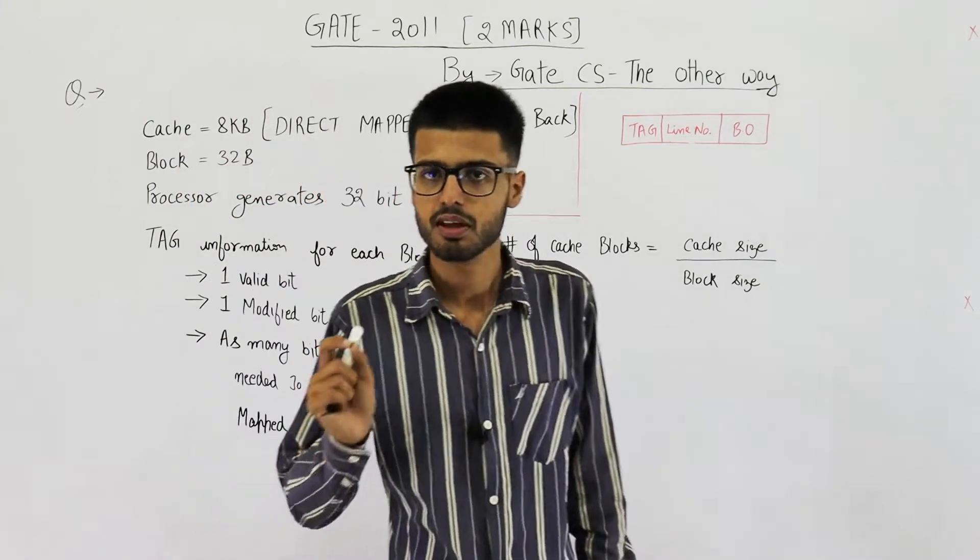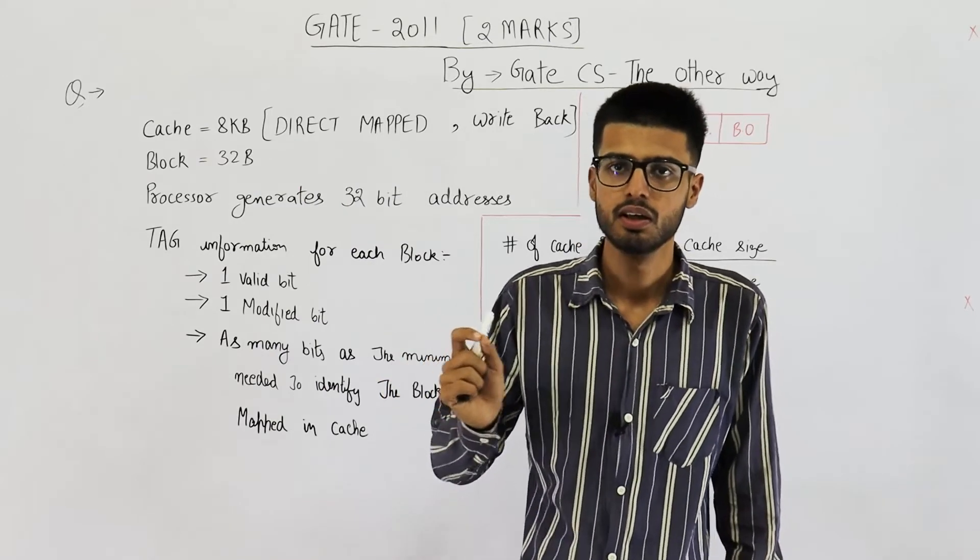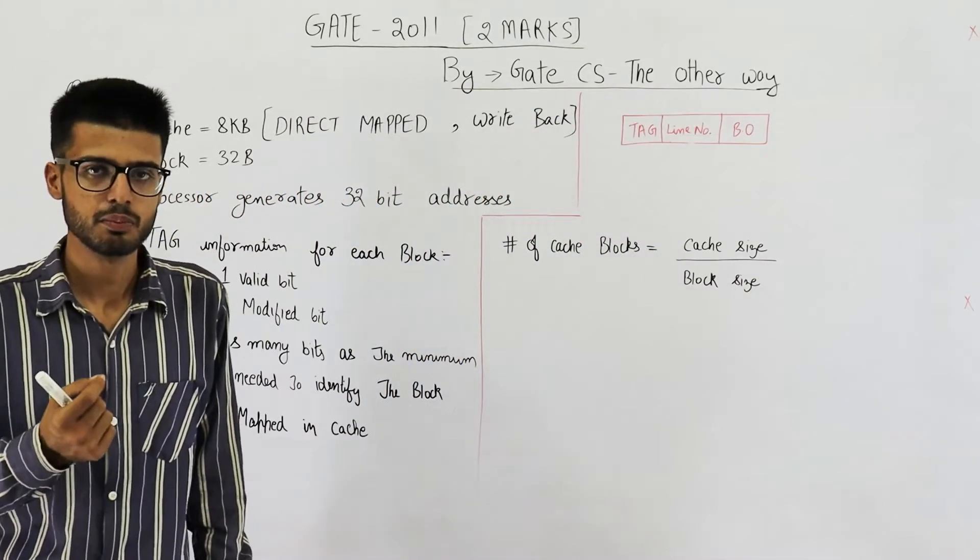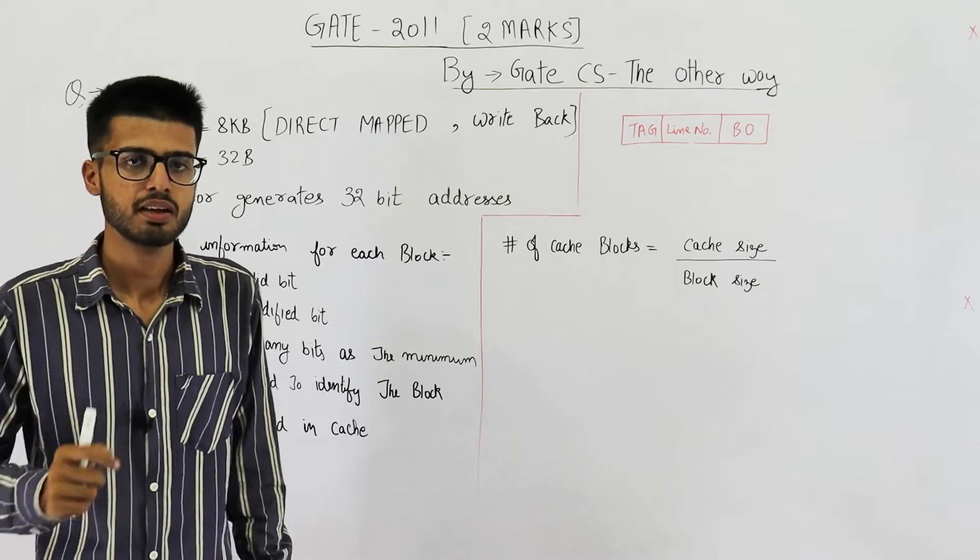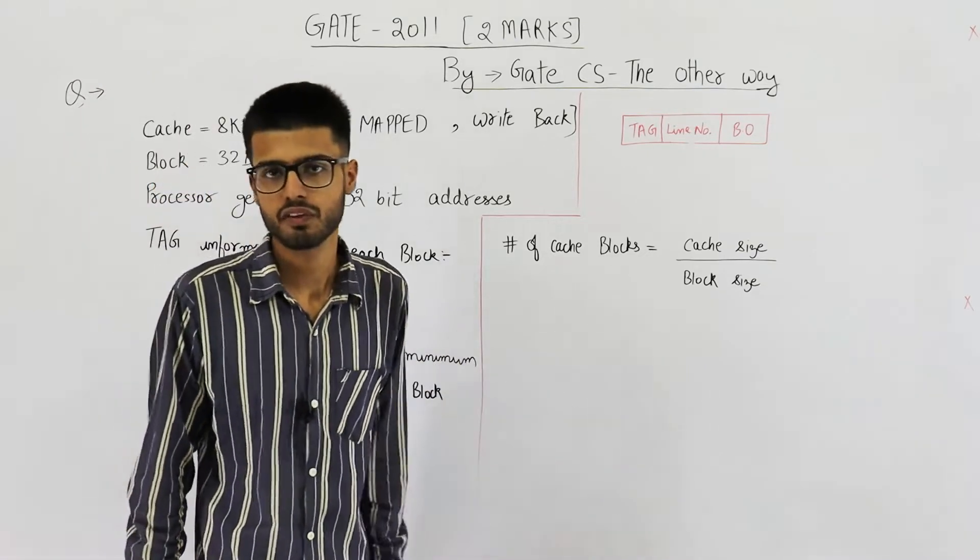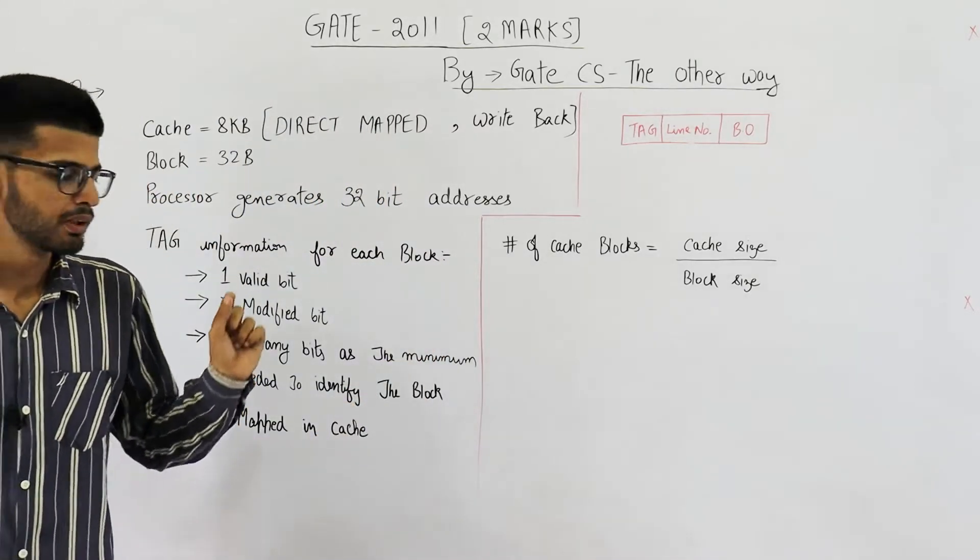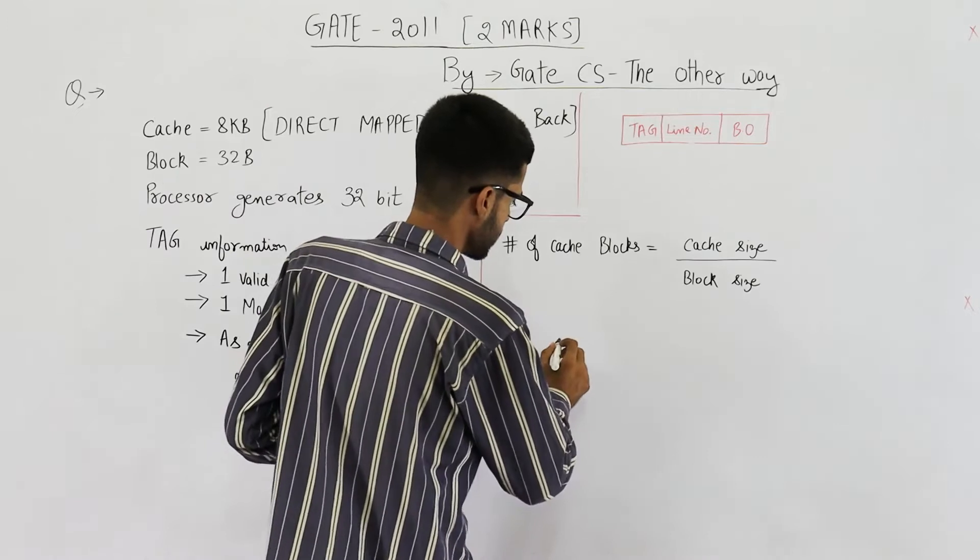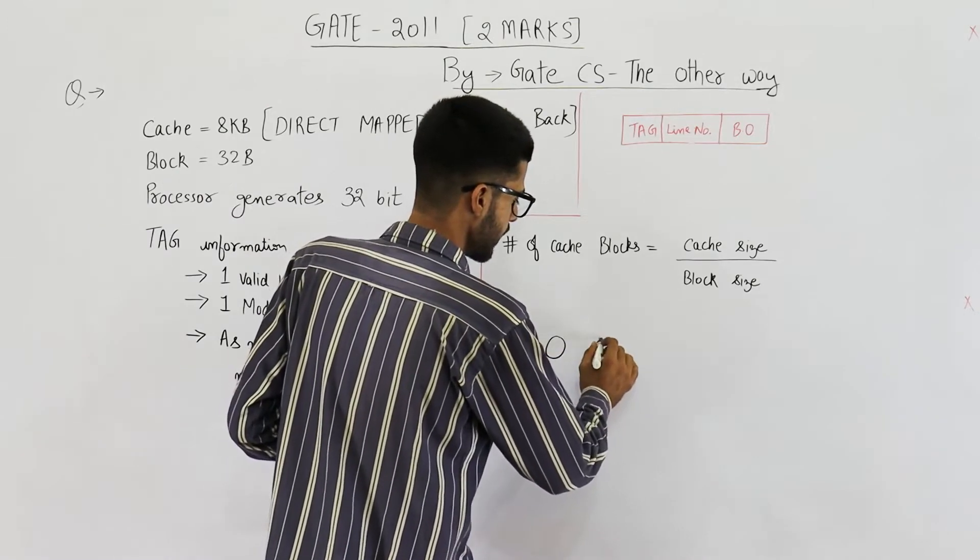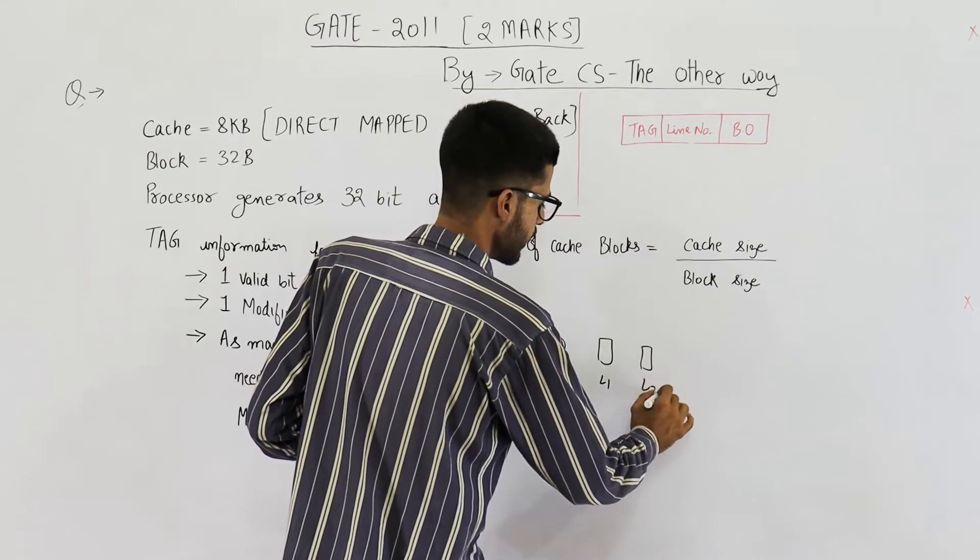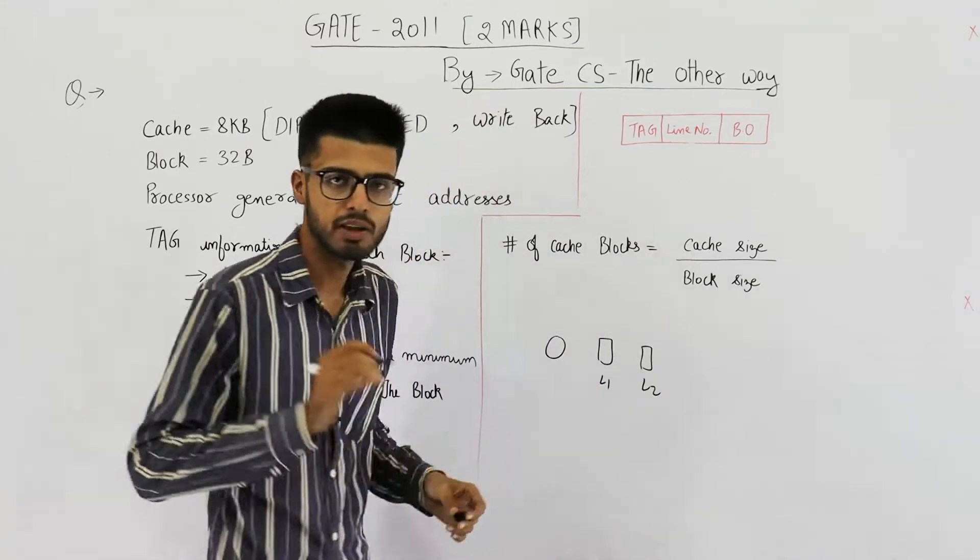You know caches are of two types: writeback and writethrough. Writethrough caches: when the change which CPU desires to make is done in all the levels of caches at the same point. That means one update will be done in L1 - say this is CPU.